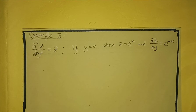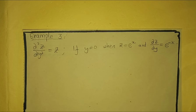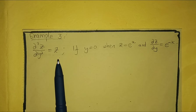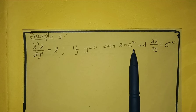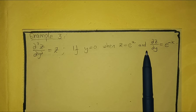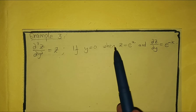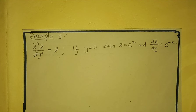Hello, welcome to Matthew Tutorials. In this video, we are going to look at example number three of a problem involving solving partial differential equations by the direct integration method. We solve ∂²z/∂y² = z, given that when y equals zero, z equals e^x and ∂z/∂y equals e^(-x). We will apply these conditions after integrating by the direct integration method.